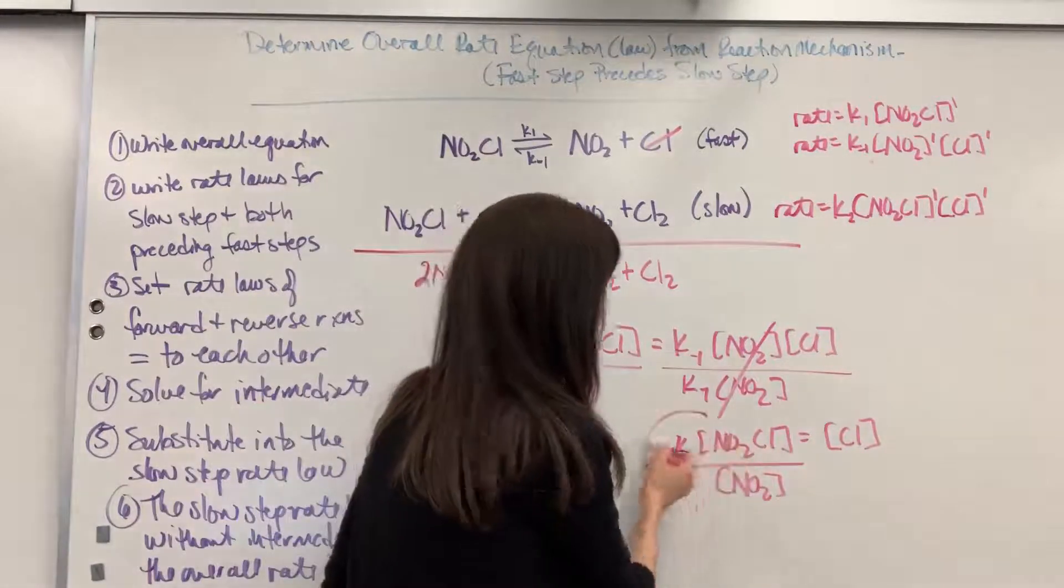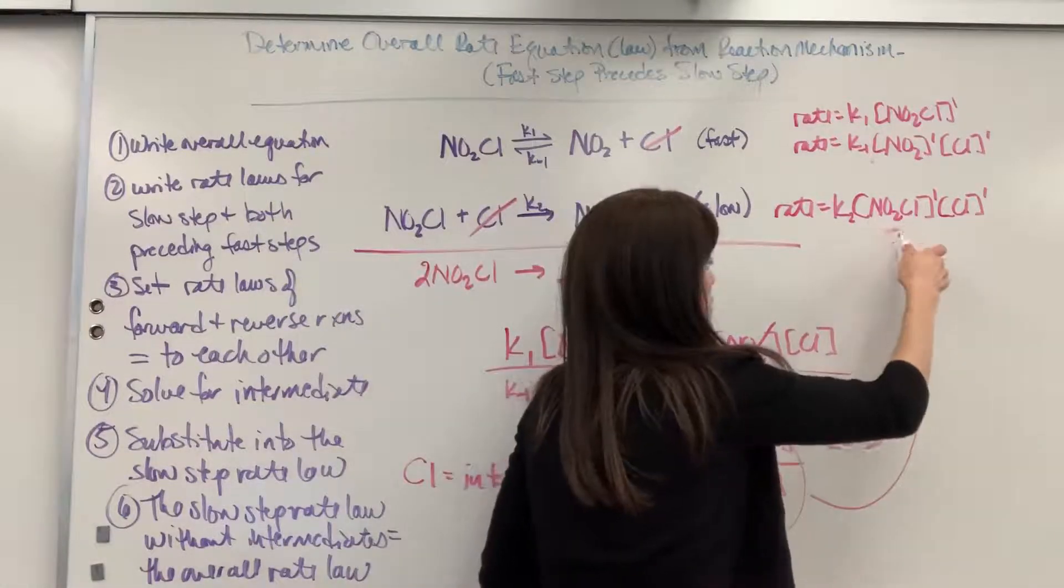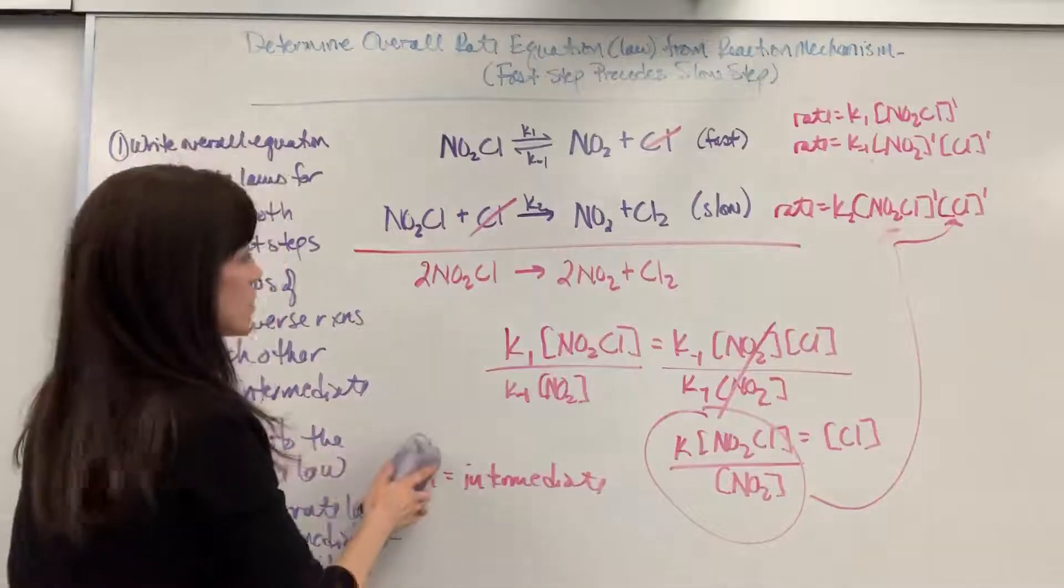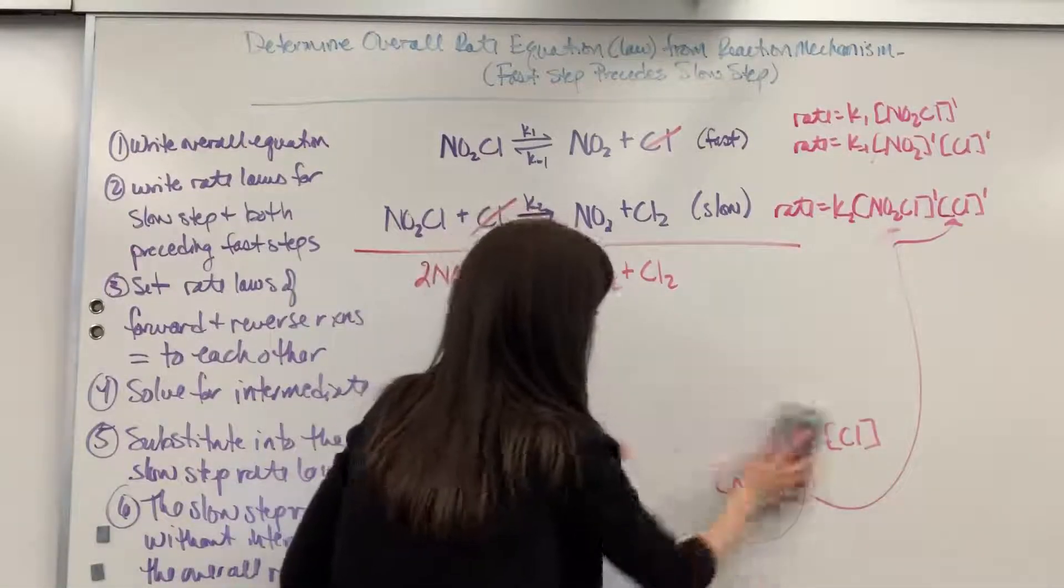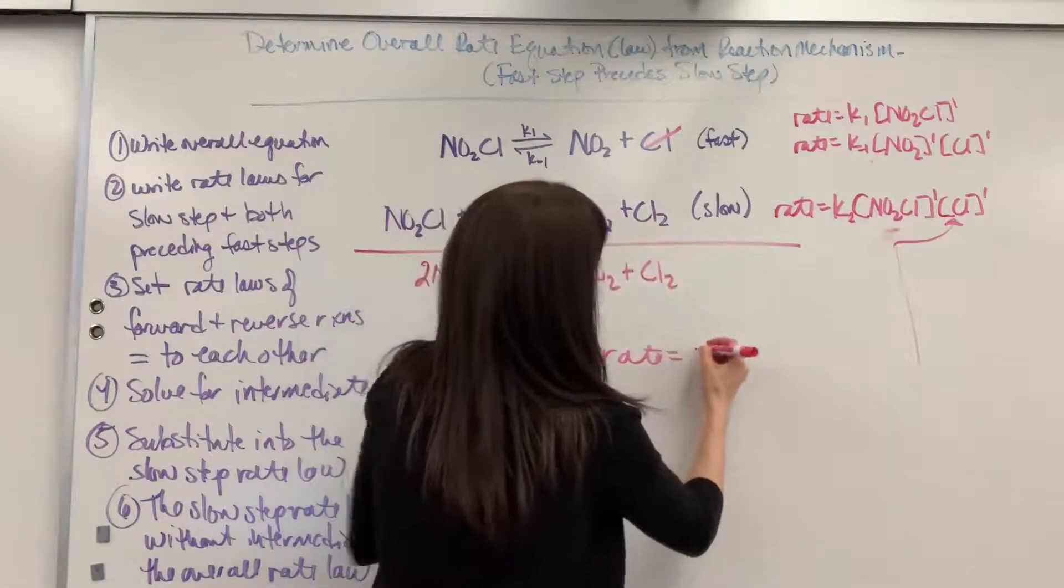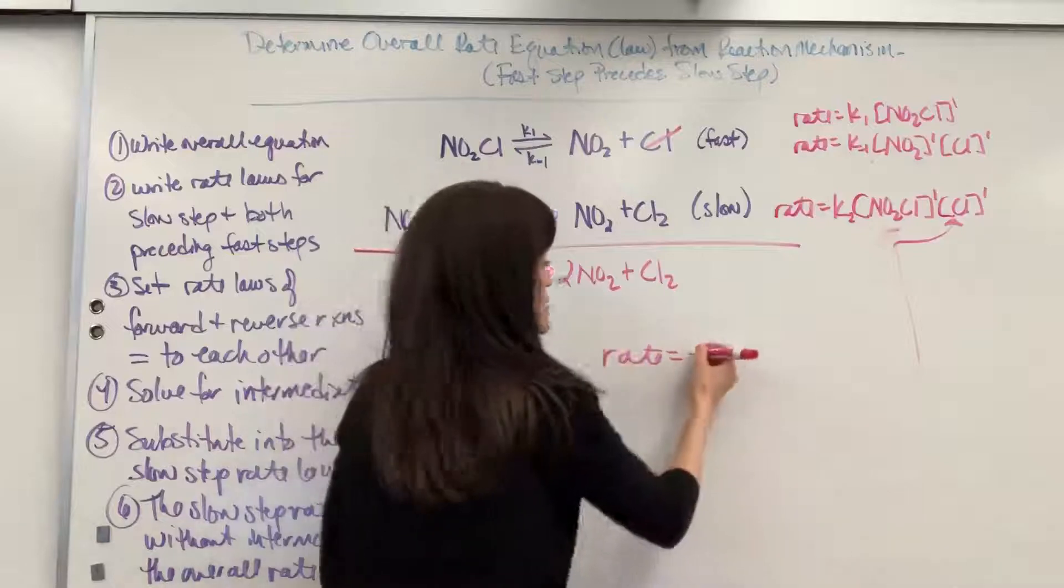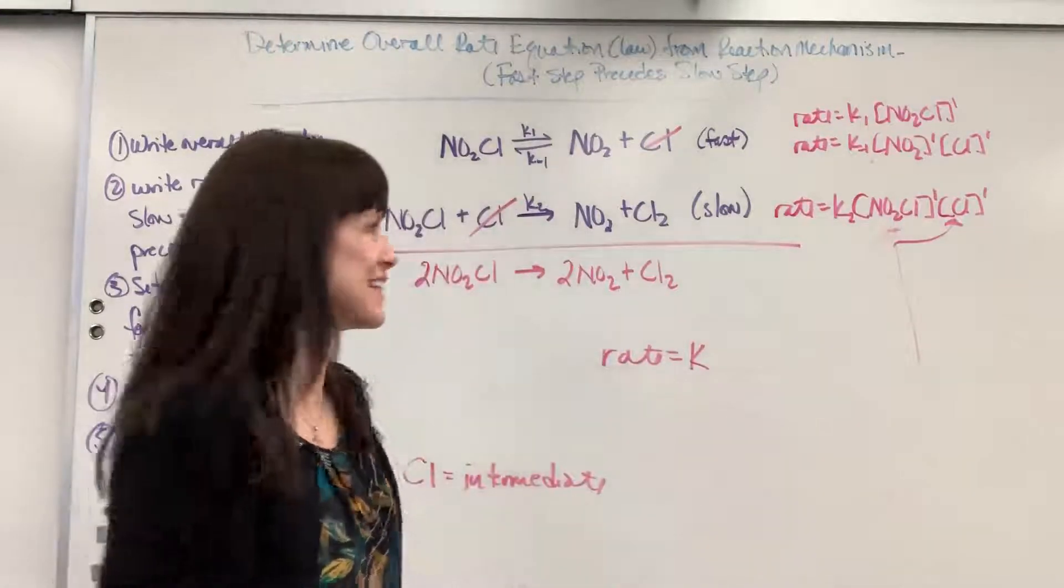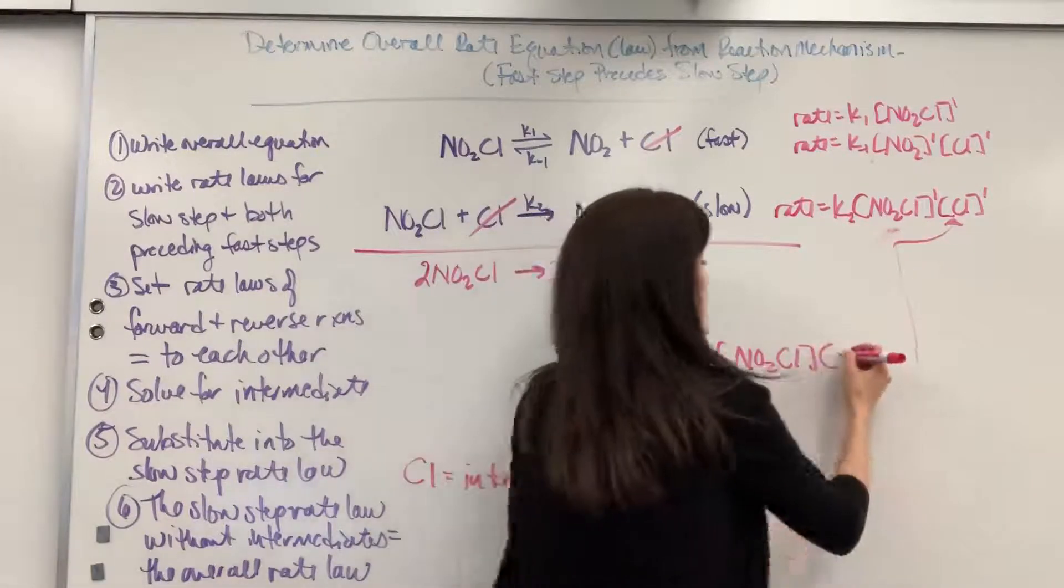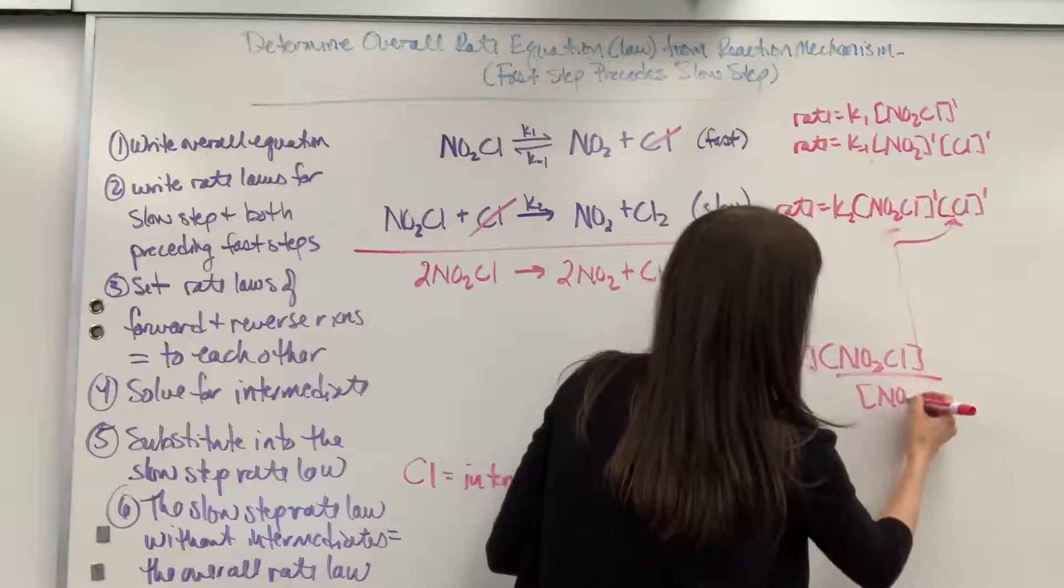I can now take this and substitute it for that chlorine right there. Let's go ahead and do that. Let's erase all this, we have a little bit more room. The rate is going to be, I had that K, K times K2, it's just going to be some number. I don't care. So we just put K. Don't worry about the Ks. Times the NO2Cl times K, this was NO2Cl divided by the NO2.